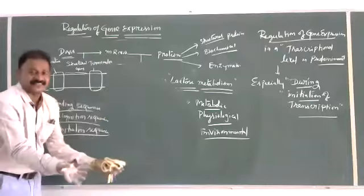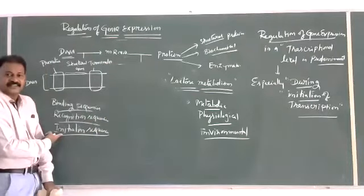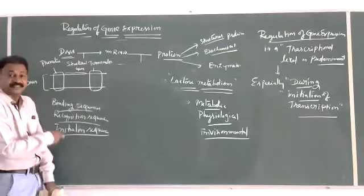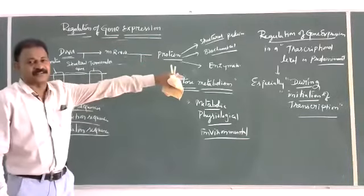To explain regulation of gene expression, scientists worked on E. coli and identified that it is because of the operon — a group of genes forming a regulation unit. For lactose metabolism in E. coli, this regulation unit is called the lac operon. The lac operon concept was first studied by Jacob and Monod in 1961, and they received the Nobel Prize in 1965. In upcoming classes, we will study this lac operon model in detail.